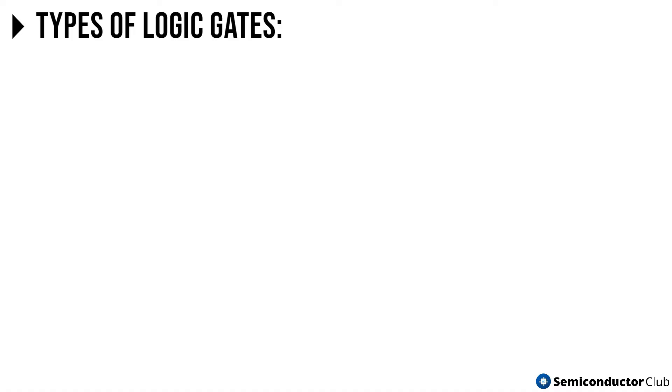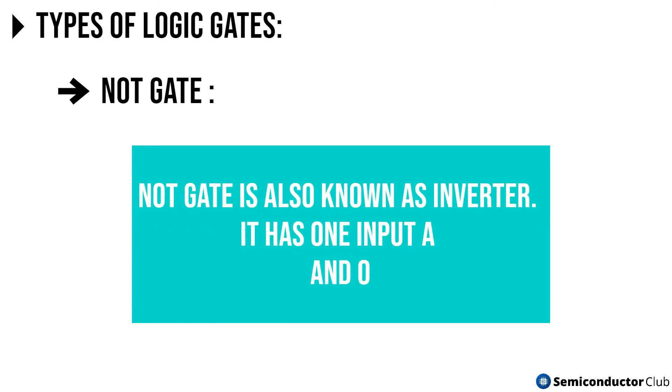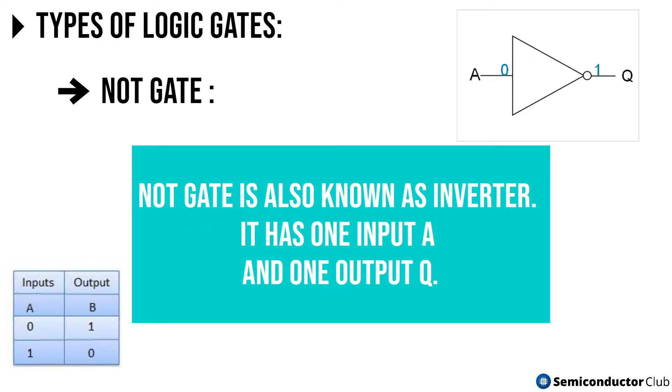Next is the NOT gate. NOT gate is also known as inverter. It has one input A and one output Q.